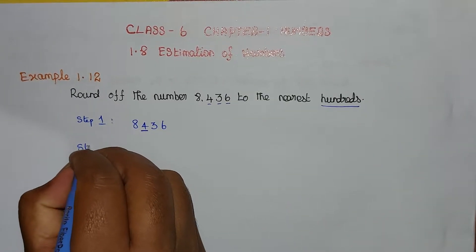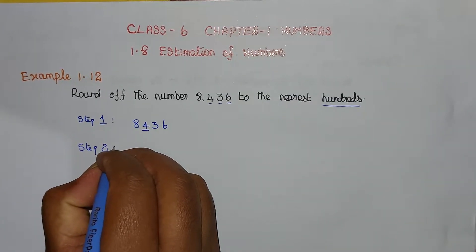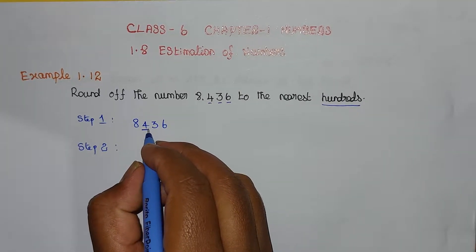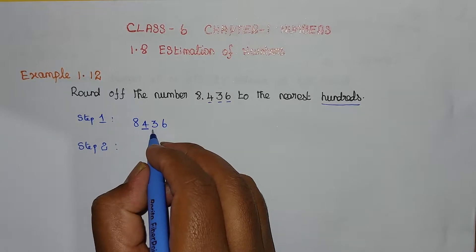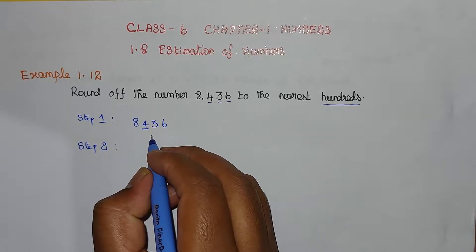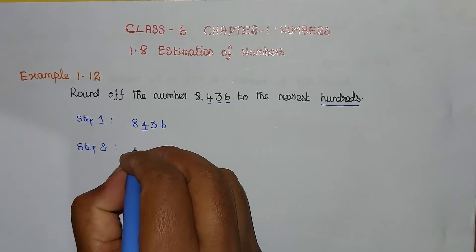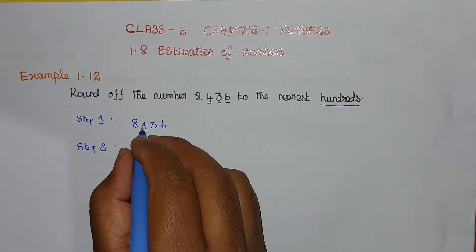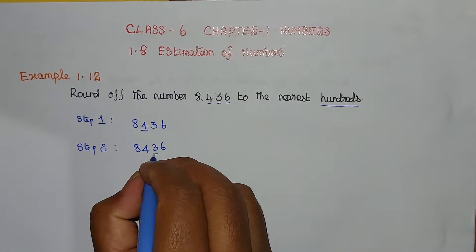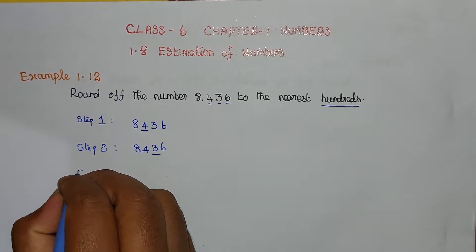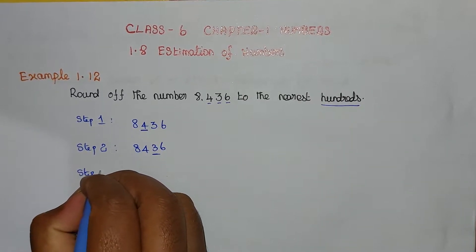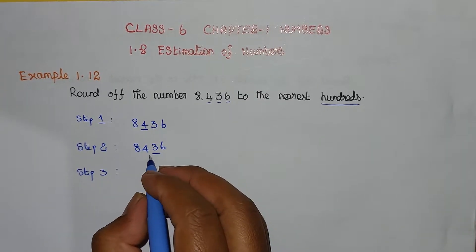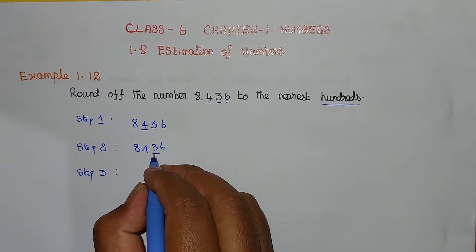Step 2, we need to find the number to the right of the hundreds place. Step 3, the digit to the right is 3.